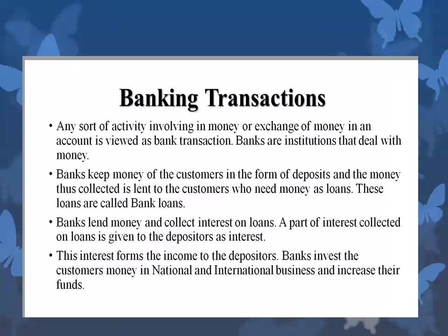Banks give loans to people in different forms — it may be a housing loan, a personal loan, or a vehicle loan. Banks lend money and collect interest on loans, and a part of the interest collected is given to depositors as interest. When we take a loan from the bank, we pay a certain amount of interest on that loan. Using that interest collected, banks also give us interest for the amount we keep as deposits. This interest forms the income of the depositors. Banks also invest customers' money in national and international business to increase their funds.